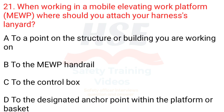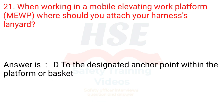Question 21: When working in a mobile elevating work platform (MEWP), where should you attach your harness's lanyard? A. To a point on the structure or building you are working on. B. To the MEWP handrail. C. To the control box. D. To the designated anchor point within the platform or basket. Answer is D. To the designated anchor point within the platform or basket.